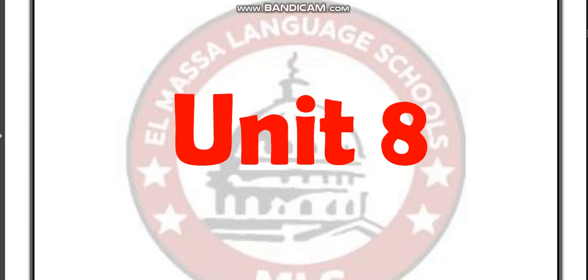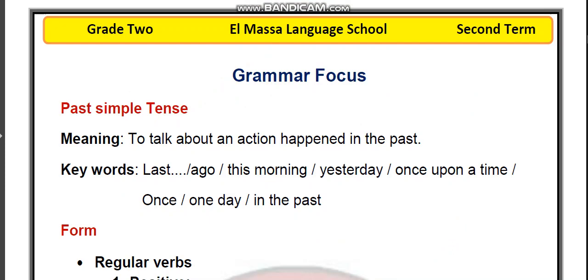Hi, my lovely kids. Today we continue Unit 8 in Macmillan. This is the time we talk about Past Simple Tense. Past Simple Tense is an action that has happened in the past. Keywords: last, ago, this morning, yesterday, once upon a time, one day — all in the past.